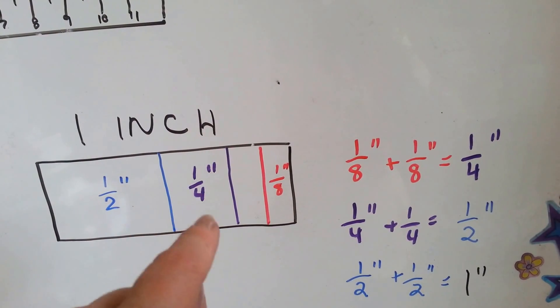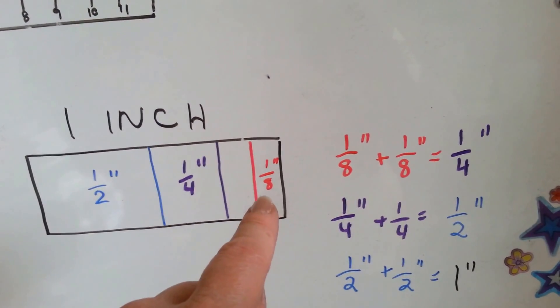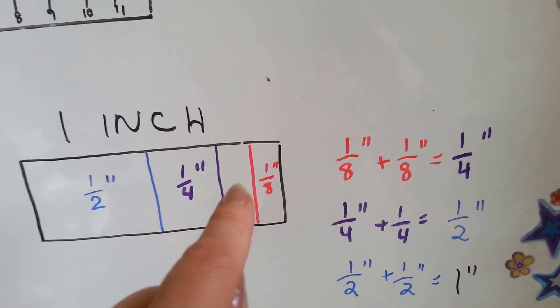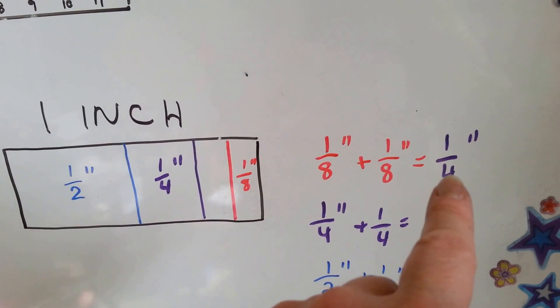If you split a fourth inch in half, you get an eighth. So an eighth and an eighth that would fit in here, that would equal a fourth of an inch.